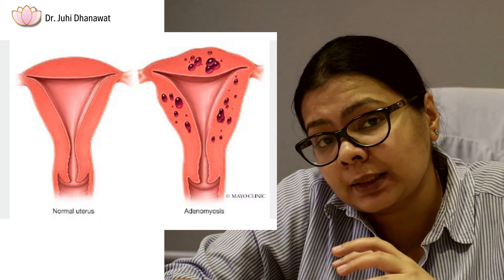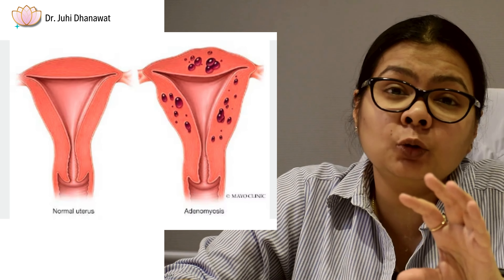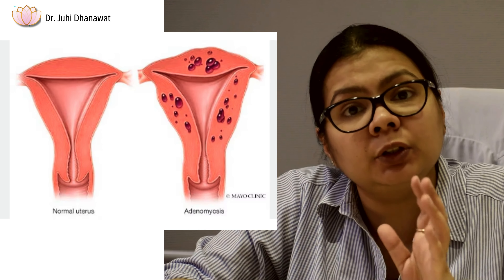How does endometriosis cause infertility? First, there is a component called adenomyosis, in which your uterus can be deformed — the internal lining of the uterus, called the endometrial layer, can also get deformed. Second, your pelvic environment may be toxic to the sperm. Third, if your ovaries are affected or you have cysts in the ovaries, then your egg quality and egg number can be reduced.